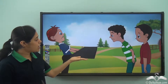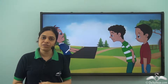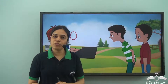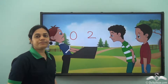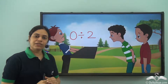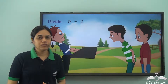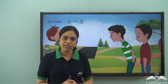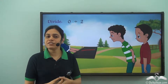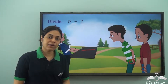But suppose Rohan has no toffees — all the toffees are finished by the time he meets his friends. So he has zero toffees and he wants to distribute them between his two friends. The answer will be given by zero divided by two. When Rohan has no toffees, how will he give anything to his friends? He cannot give anything, and they don't get anything — they get nothing, or no toffees.